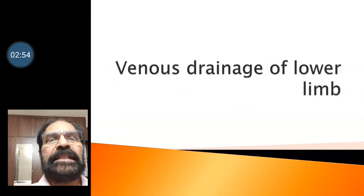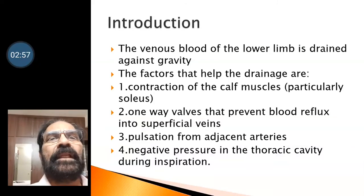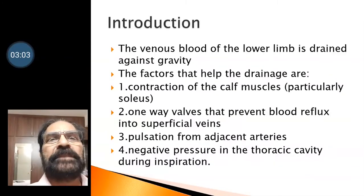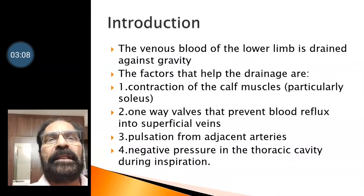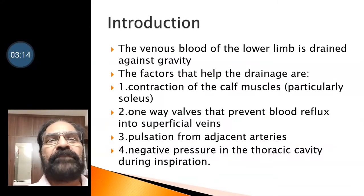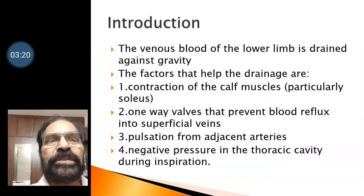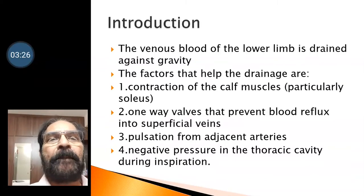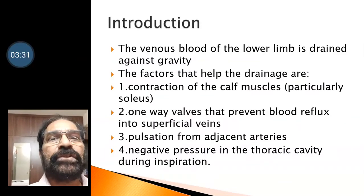Now we go to venous drainage of the lower limb. The venous blood of the lower limb is drained against gravity. The factors that help in drainage are: the contraction of the calf muscles, particularly the soleus; one-way valves that prevent blood reflux into superficial veins; pulsations of adjacent arteries; and negative pressure created in the thoracic cavity during inspiration.